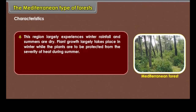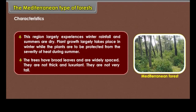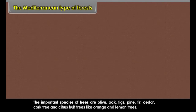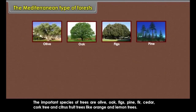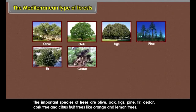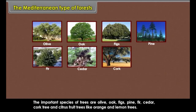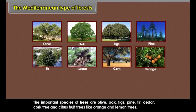Characteristics: This region largely experiences winter rainfall and summers are dry. Plant growth largely takes place in winter while the plants are protected from the severity of heat during summer. The trees have broad leaves and are widely spaced; they are not thick, luxuriant or very tall. The important species of trees are olive, oak, figs, pine, fir, cedar, cork tree and citrus fruit trees like orange and lemon.